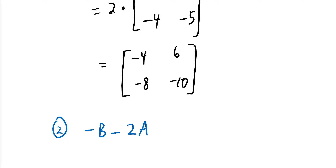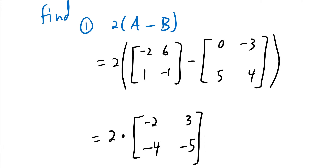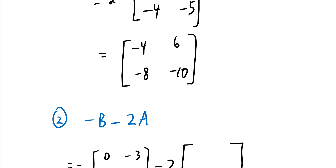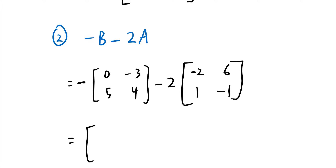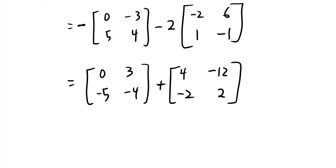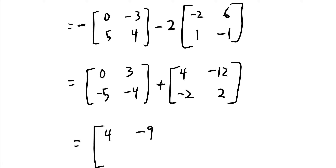Now find -B - 2A. Starting with B = [0, -3; 5, 4]: applying the negative sign gives [0, 3; -5, -4]. Then 2A = 2×[-2, 6; 1, -1] — distributing the -2 gives [4, -12; -2, 2]. Adding corresponding entries: 0+4=4, 3+(-12)=-9, -5+(-2)=-7, -4+2=-2. The answer is [4, -9; -7, -2].